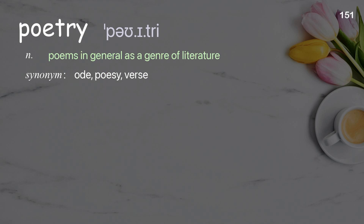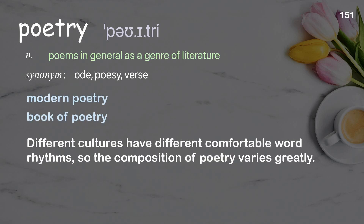Poetry: poems in general as a genre of literature. Examples: modern poetry, book of poetry. Different cultures have different comfortable word rhythms, so the composition of poetry varies greatly.